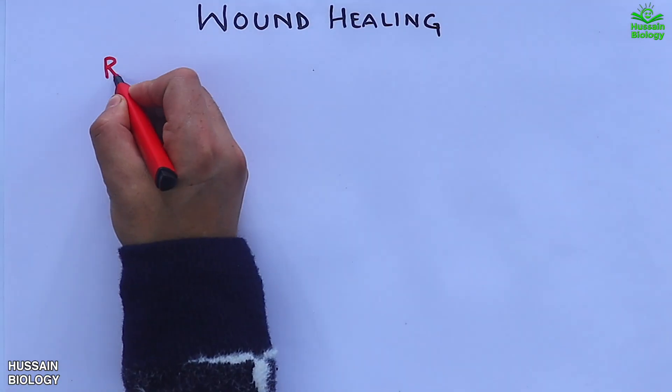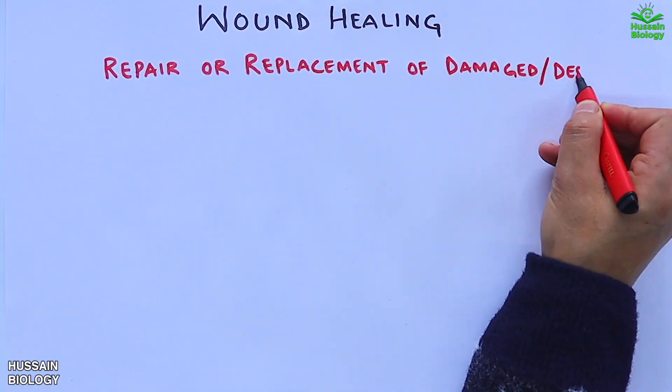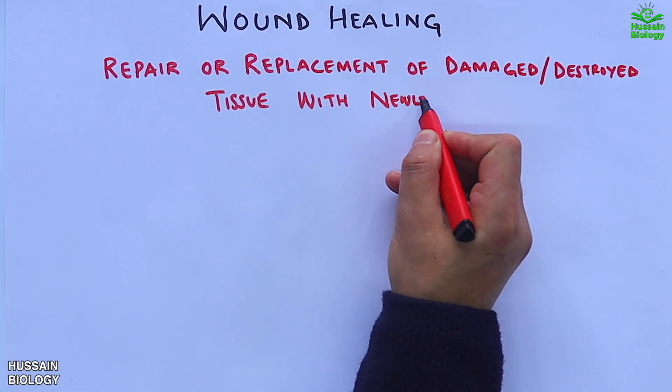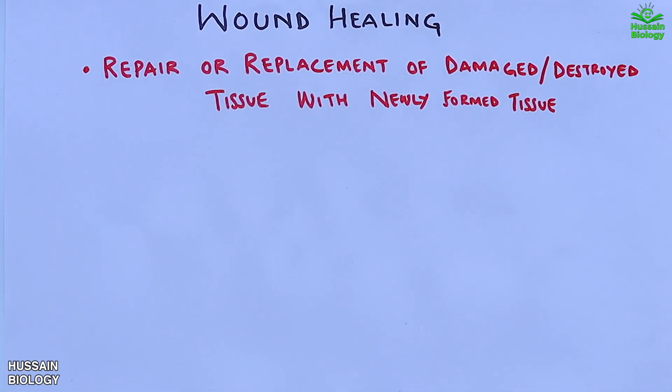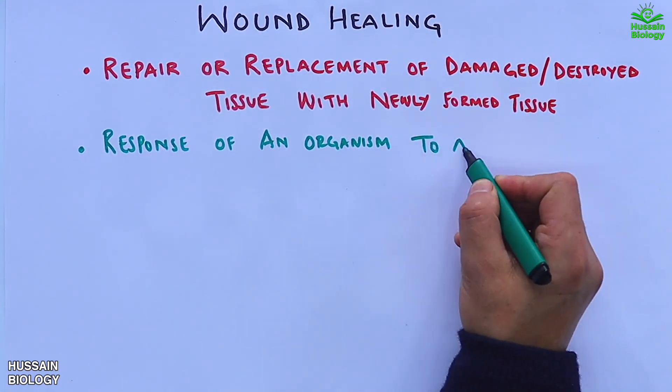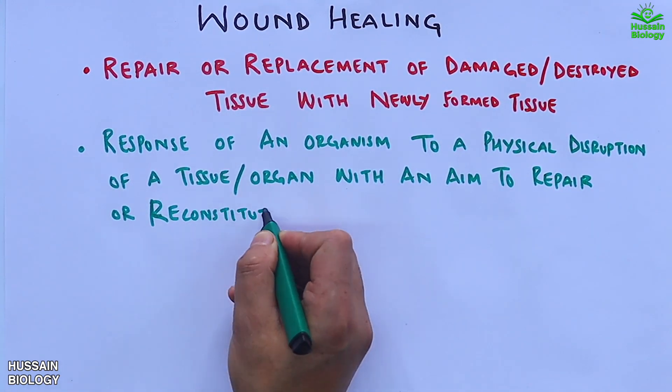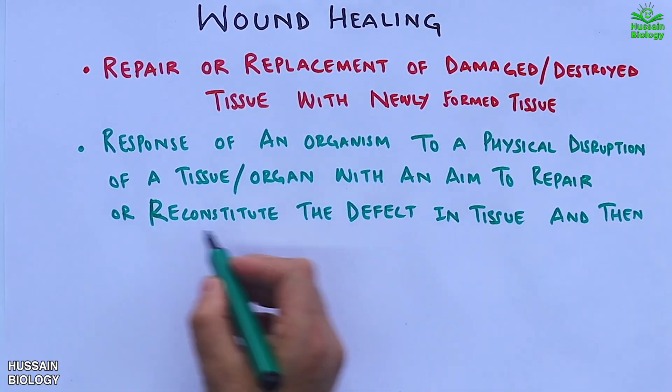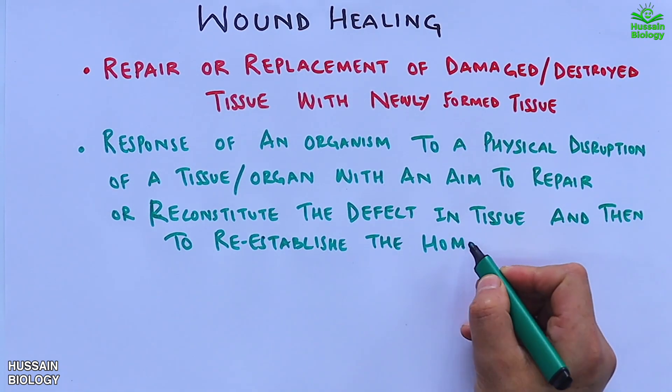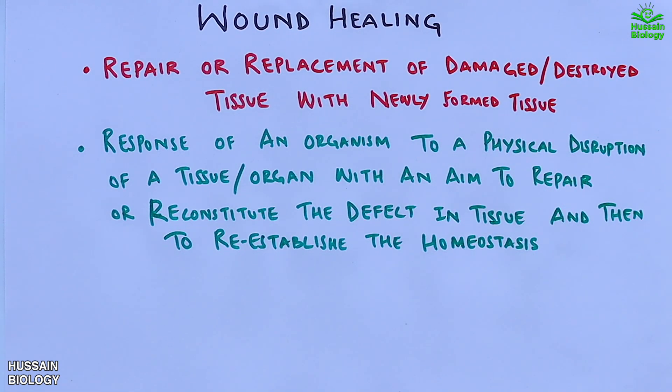Wound healing can be defined as the repair or replacement of damaged or destroyed tissue with newly formed tissue. It is the response of an organism to a physical disruption of a tissue or an organ, with an aim to repair or reconstitute the defect in the tissue and then to reestablish the hemostasis.